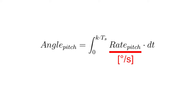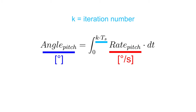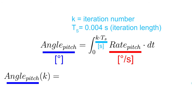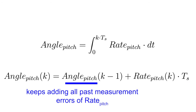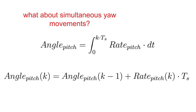A very simple approach to measure angles can be found by simply integrating the rotation rates to get the actual angle. Remember that k holds the number of the current iteration and Ts is the iteration length, which is equal to 4 ms in a 250 Hz loop. If you would discretize the integral for using the Arduino code, you would need to add the rotation rate multiplied by the iteration length to the angle of the previous iteration. This approach has two major problems: you keep dragging all measurement errors from previous iterations with you, causing the calculated angle to drift very fast. Another issue is the change of angles during a yaw movement.